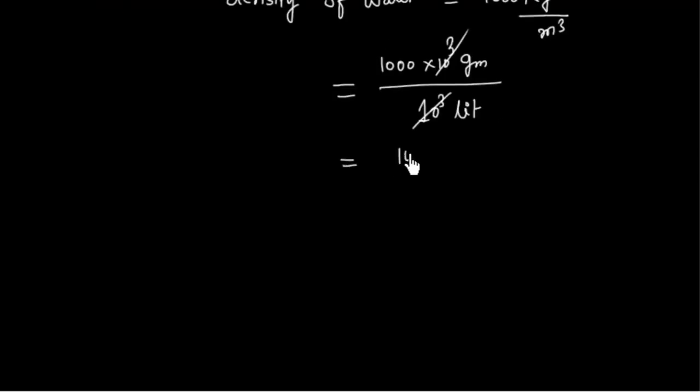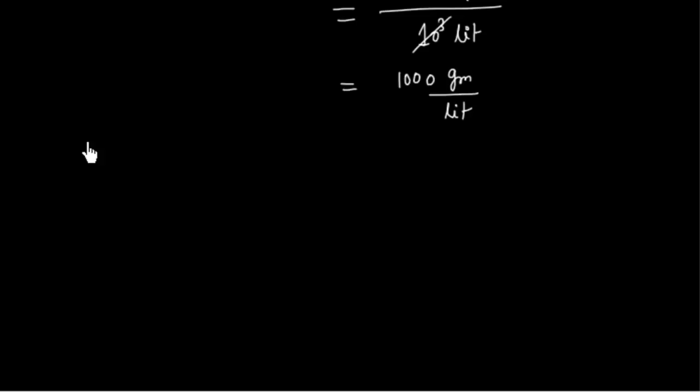So this is 1000 grams per liter. So what we have is 1 liter water. So 1 liter water has a weight of 1000 grams.